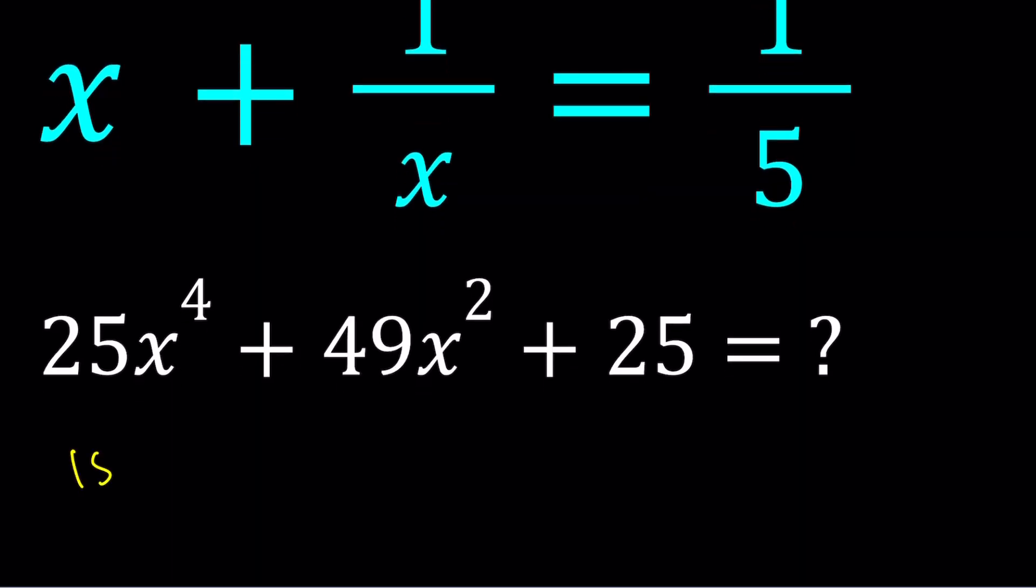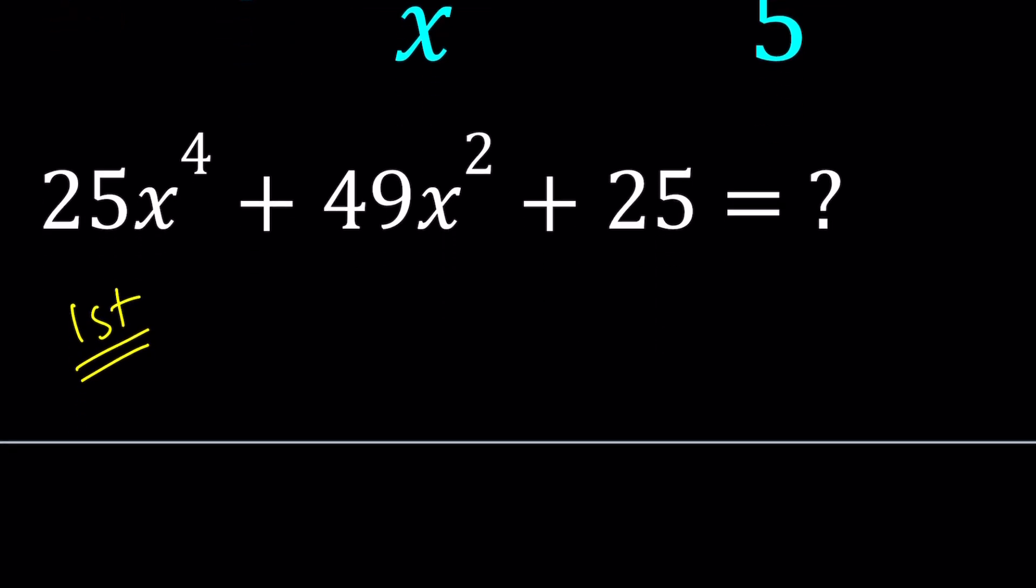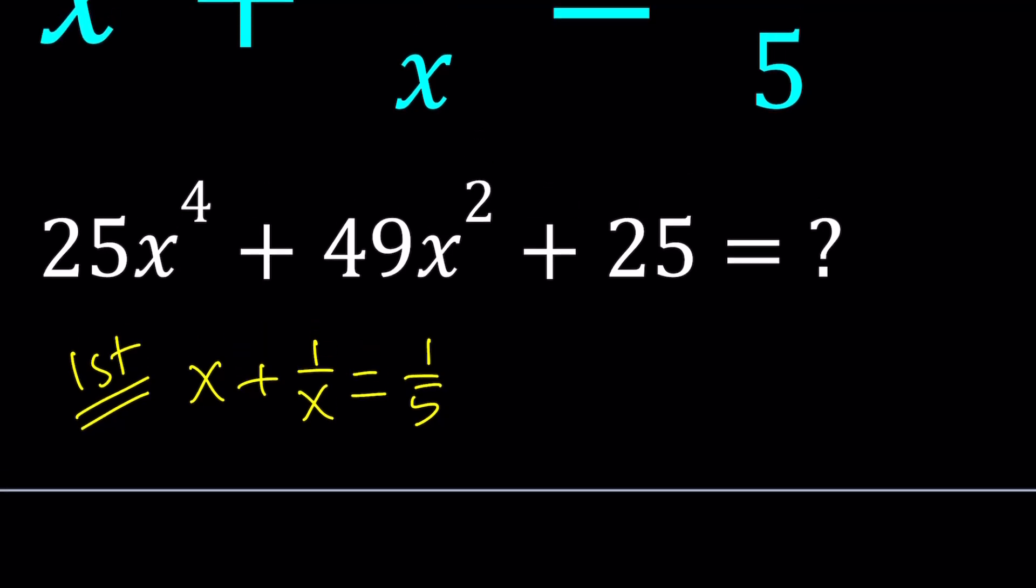So for my first method, since I'm given an equation, I'm going to go ahead and evaluate x. So I'll find the value of x. x plus 1 over x equals 1 over 5. Actually, I already got the solution, so let me go ahead and show you. But before we look at the solution, I want to say something.